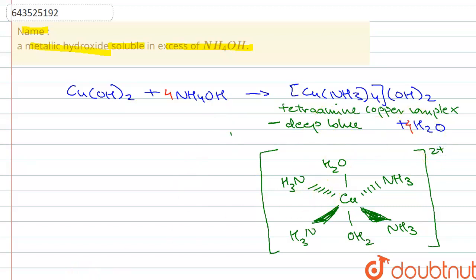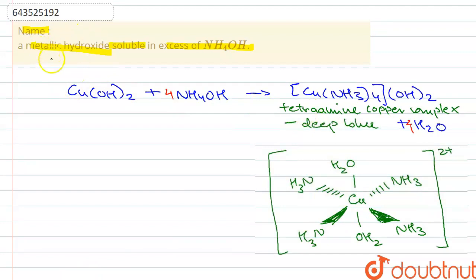So here in this question they had asked us to name a metallic hydroxide. Since copper is a metal and copper hydroxide is the metallic hydroxide which is soluble in NH4OH, it dissolves in NH4OH to form this copper complex. So the answer for this question is copper hydroxide.